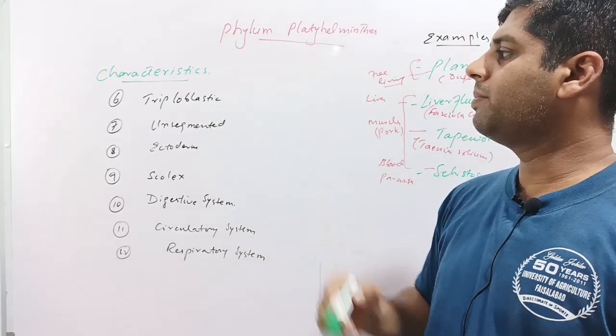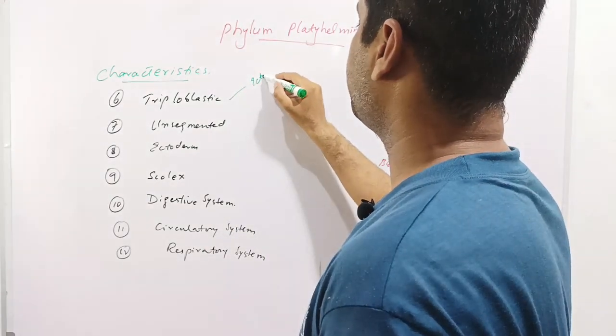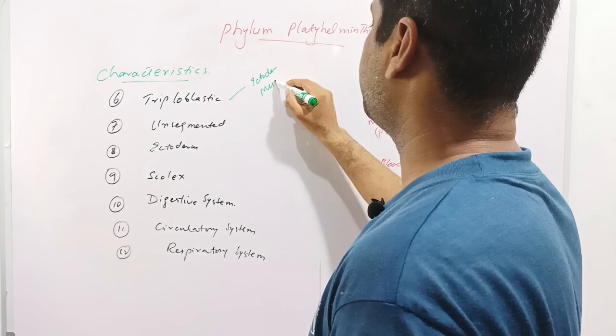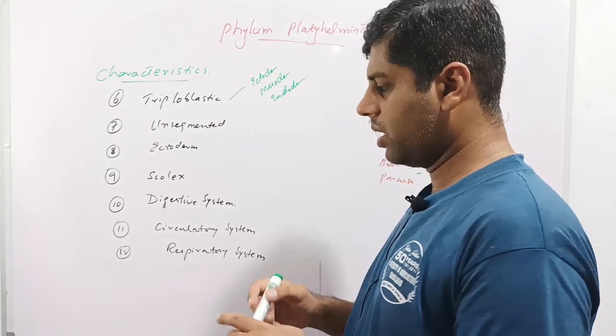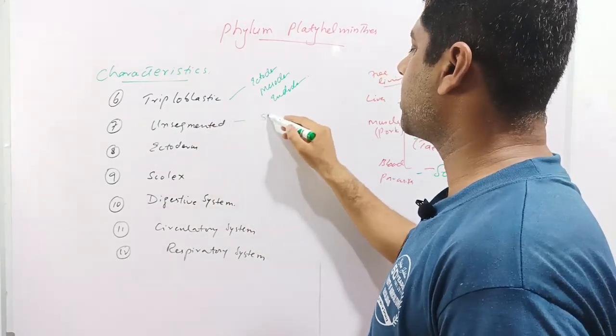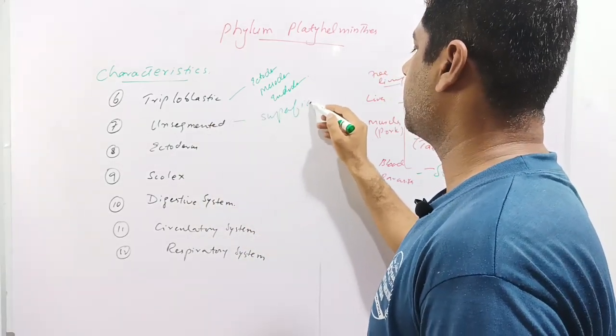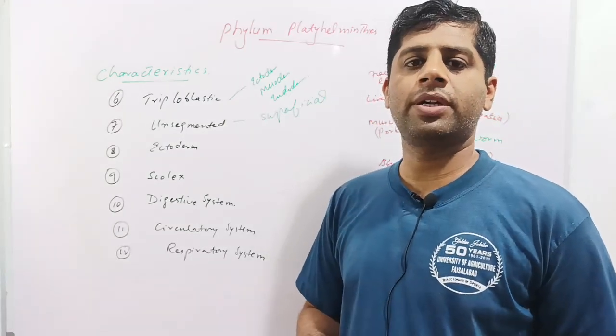The members of phylum Platyhelminthes are triploblastic. Their body is made up of three layers: ectoderm, mesoderm, and endoderm. These are either unsegmented or if segments are present, they are superficial segments. So we can say these are superficially segmented, not metamerically segmented.